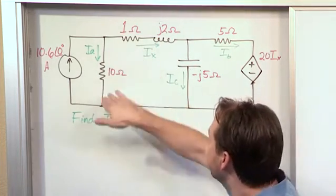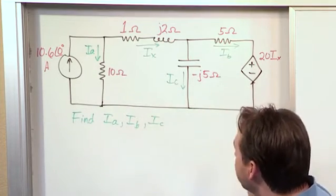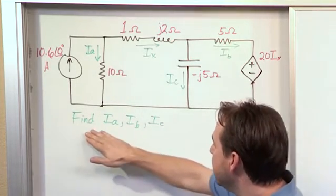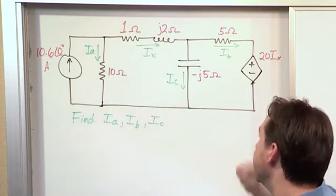Now we have some branch currents that are labeled here, Ia, Ib, and Ic, and the problem is use the node voltage technique in phasor analysis to find Ia, Ib, and Ic.